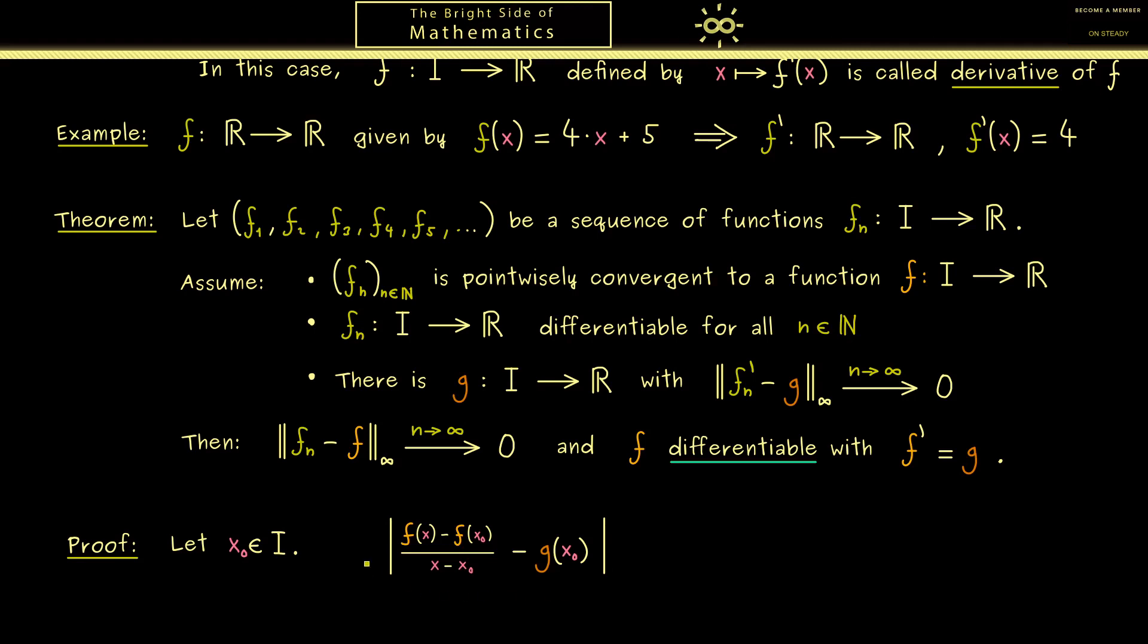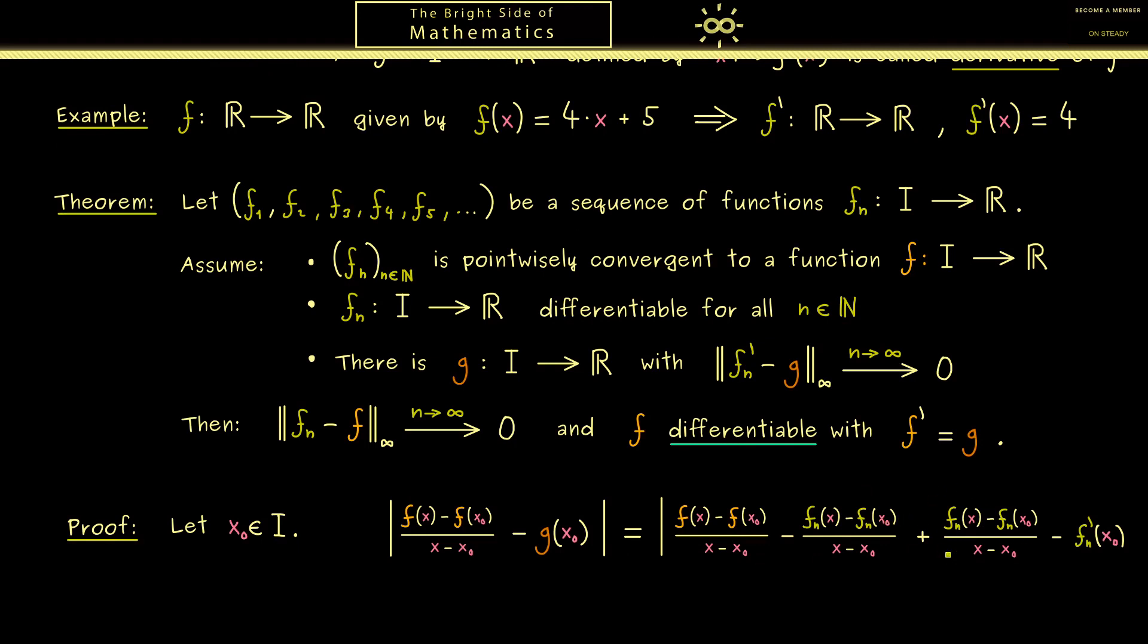And maybe you can already guess what we need here is the triangle inequality for the absolute value. In order to apply it we have to add suitable terms in the middle. For example, to get an estimate here we can use the difference quotient of the function fn. However, if we don't want to change the whole equation we have to add this difference quotient again. Since we look at the difference quotient of fn, it might also be useful to include the derivative of fn. Now at this point we can split up the whole expression into 3 parts. The triangle inequality tells us that the left hand side is less or equal than the right hand side.